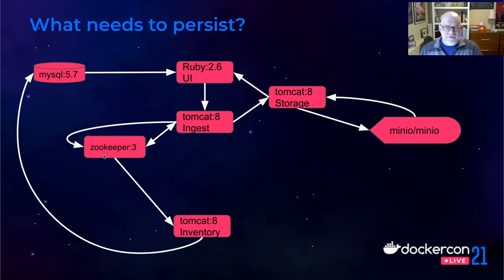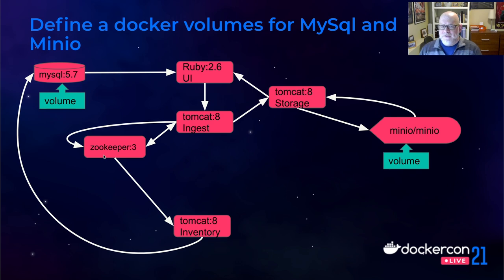The last decision was to decide what to persist — when we stop our stack of containers and restart them later, what content do we want to preserve from run to run? We determined that the contents of the inventory database and the contents of the Minio storage container were the things we wanted to persist.